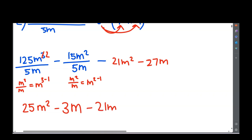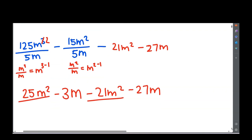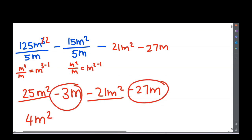So we've got 25m² minus 21m² minus 3m minus 27m. Now just sort out the like terms: 25m² minus 21m² gives 4m². And minus 3m minus 27m is minus 30m. That is my final answer: 4m² minus 30m.